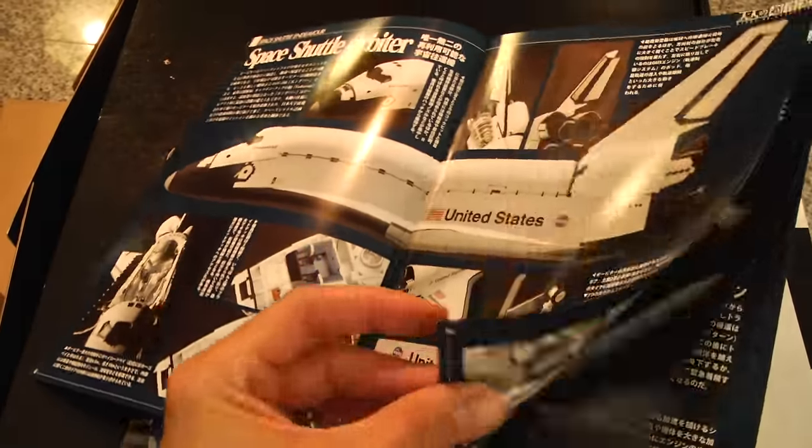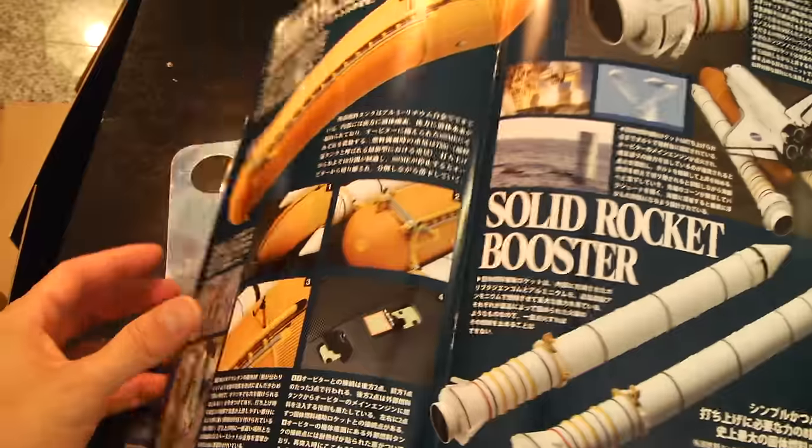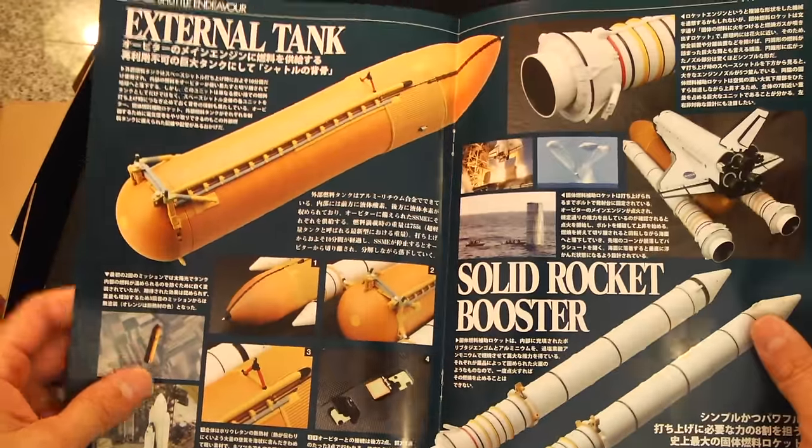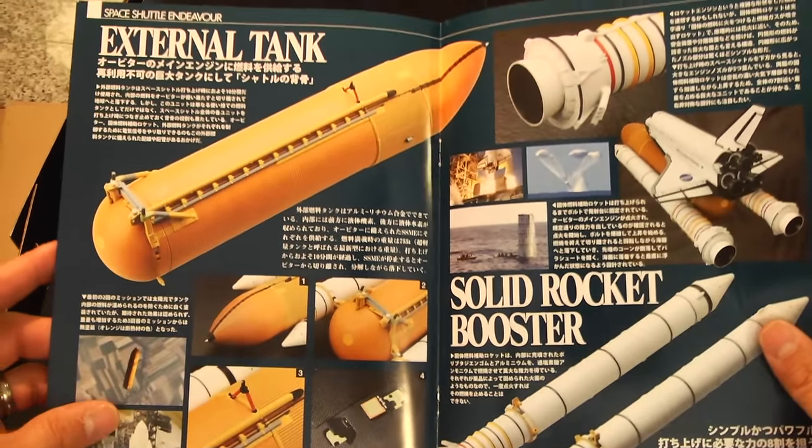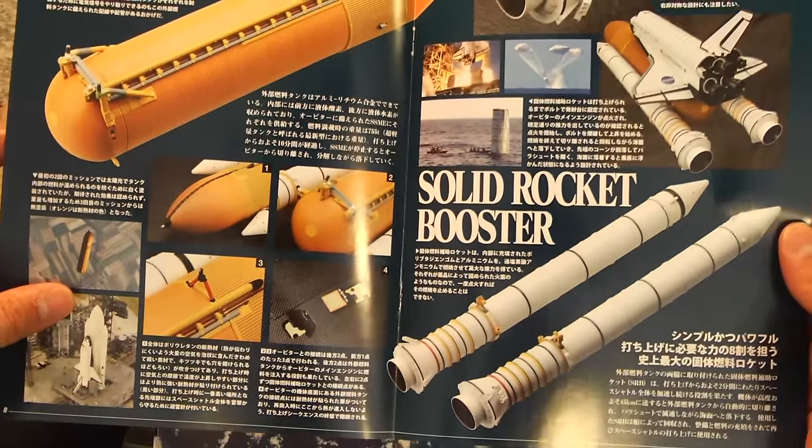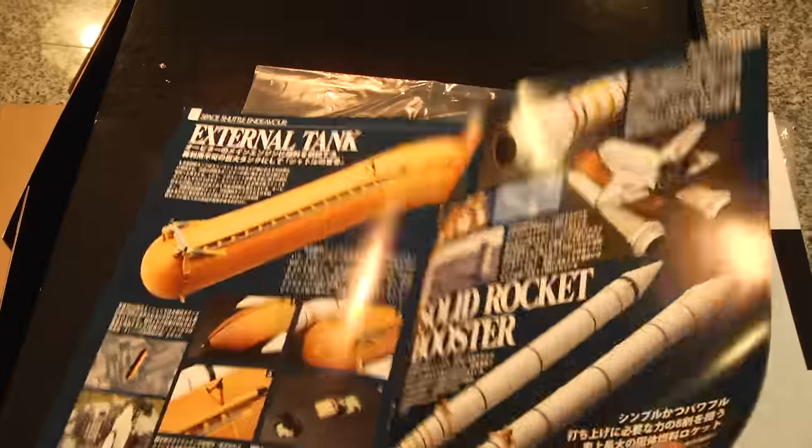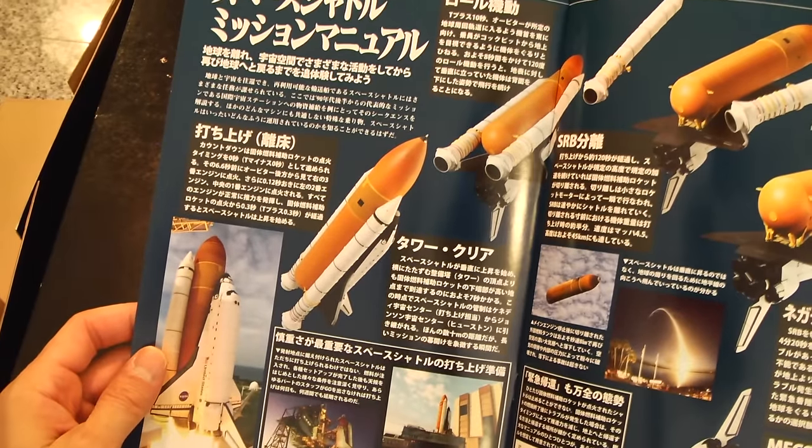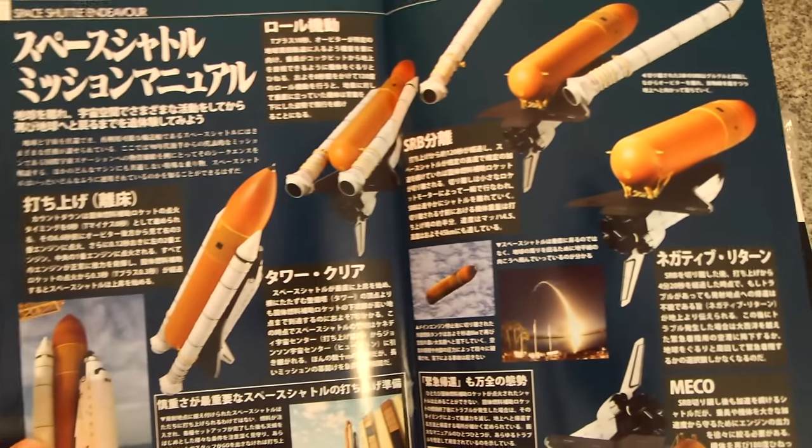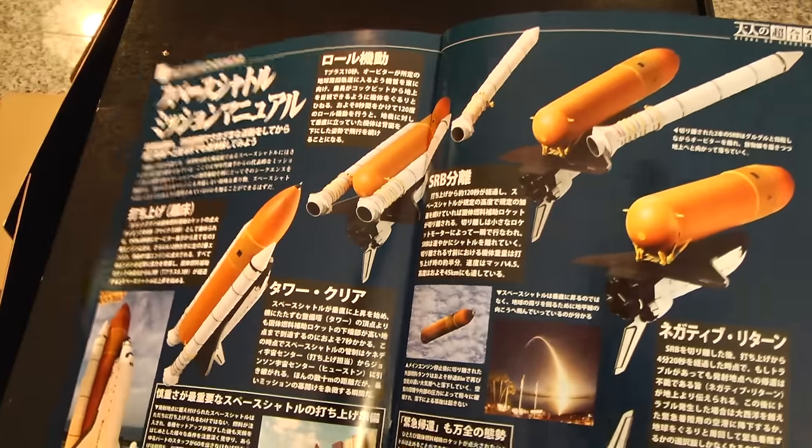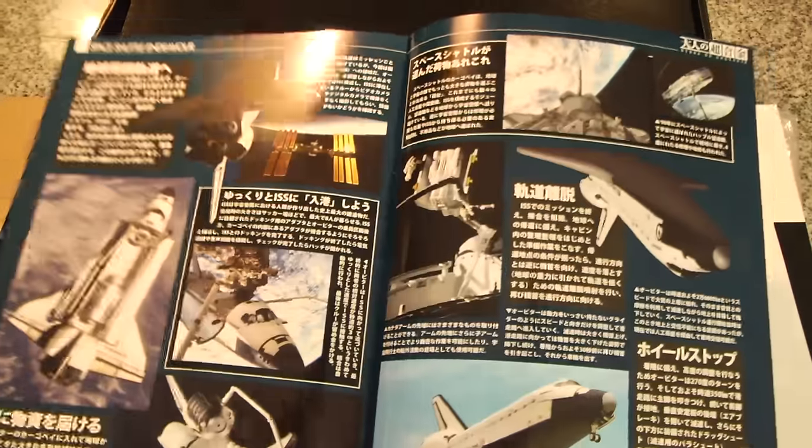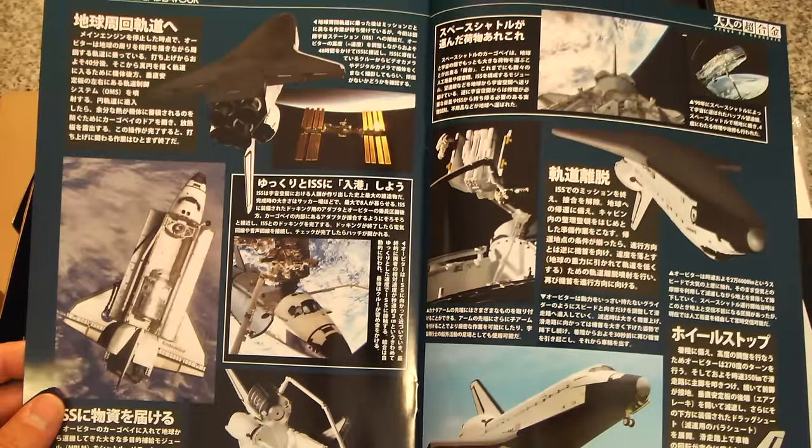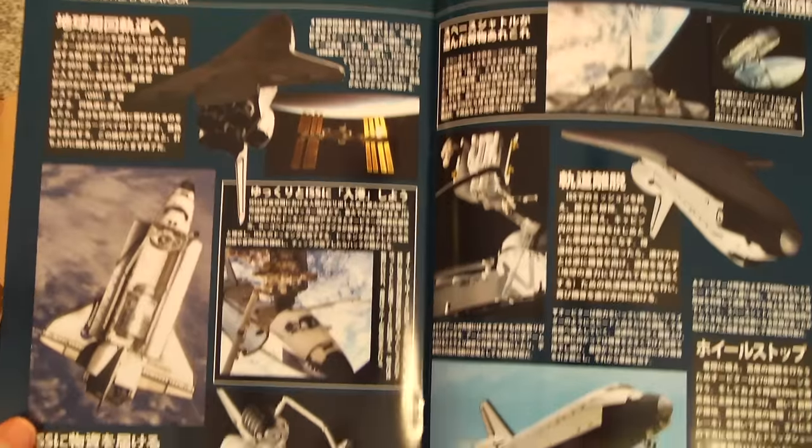Very illustrated book. I kind of wish I could read Japanese, but you can kind of figure it out. External Tank, Solid Rocket Boosters, The Orbiter. I'm sure it provides a lot of fun facts. In this instance, I really wish I could read Japanese just to kind of read all the fun facts. I'm somewhat knowledgeable about the Orbiter and its missions.